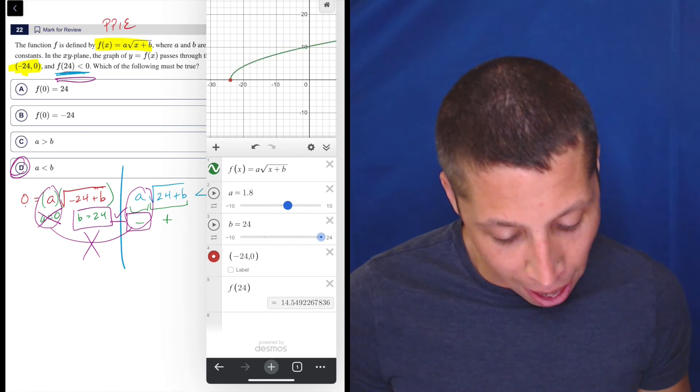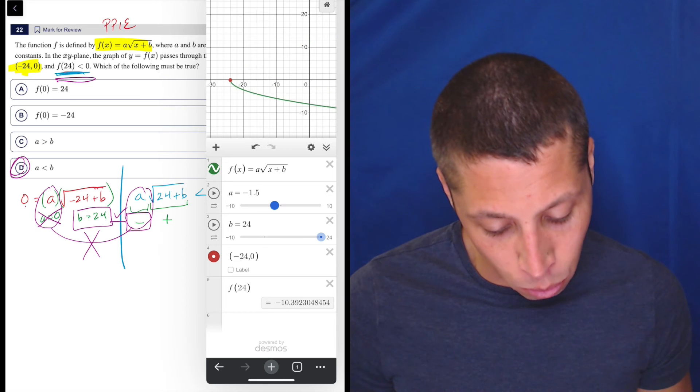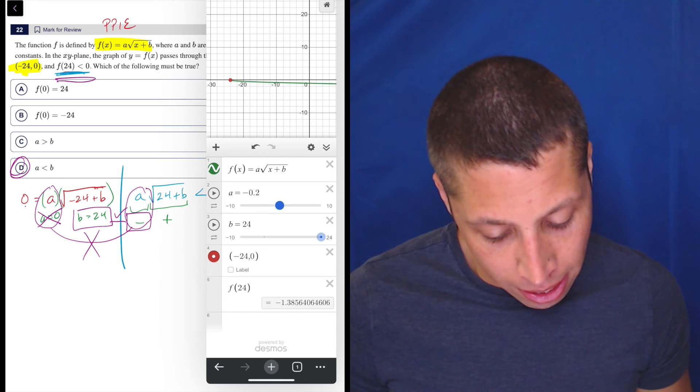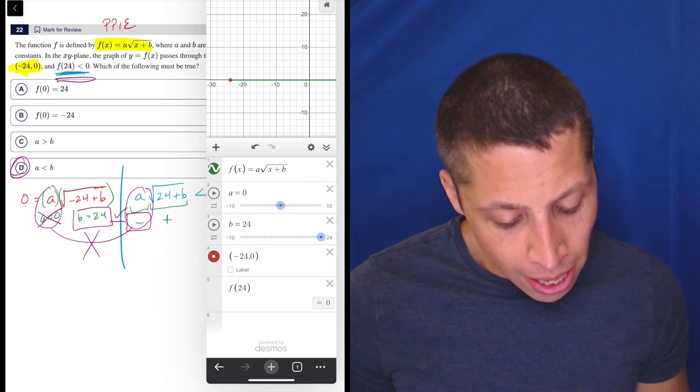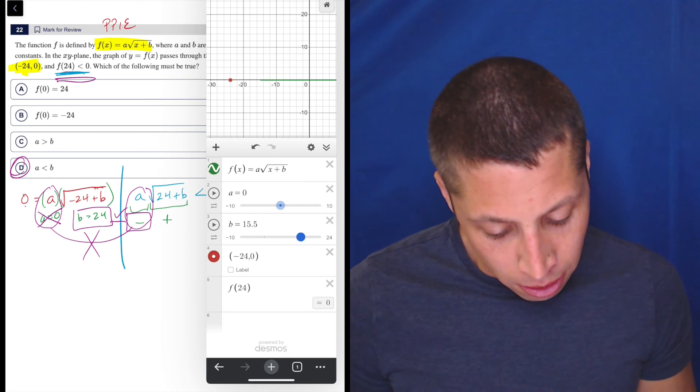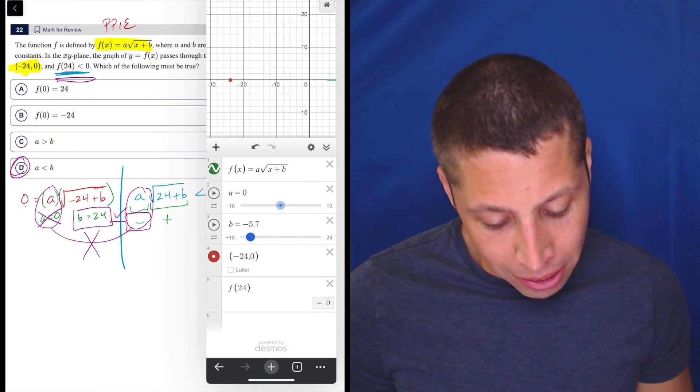If I make it above, now F of 24 is positive. So, that doesn't work. So, I can also play with other things. If I made A 0 and started messing with the B, F of 24 would be equal to 0.